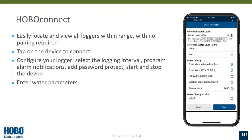For our water level data loggers, you also have the ability to enter water parameters. You would take a reference water level reading and let the logger know what depth it's experiencing for pressure, and then it'll use that to calibrate itself to any change or deviation in water level. You also have the ability to adjust for different types of water densities — freshwater, saltwater, brackish water — or manually input the pounds per cubic foot of the water you're deploying in.